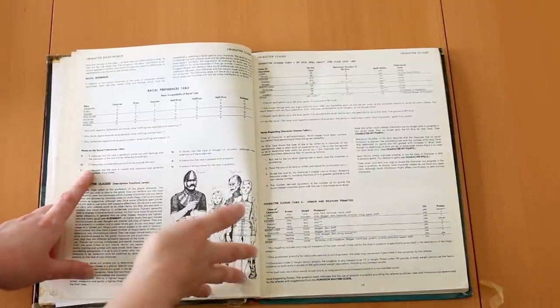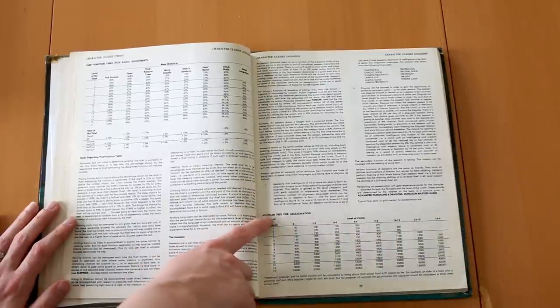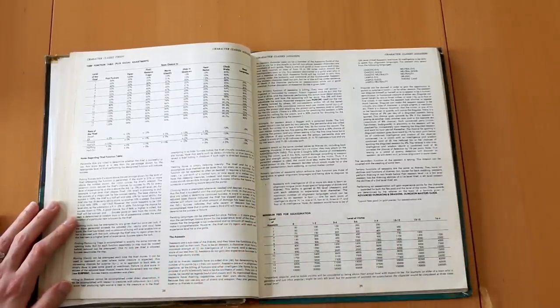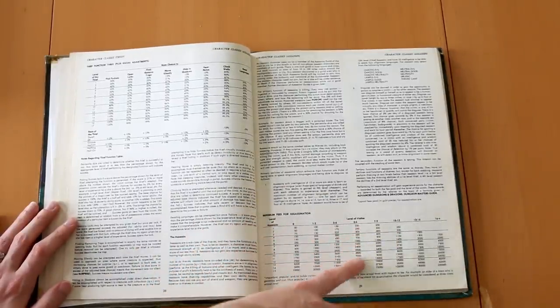Beautiful illustrations often here. Love it. Minimum fees for assassination. The level of the victim. That's amazing.